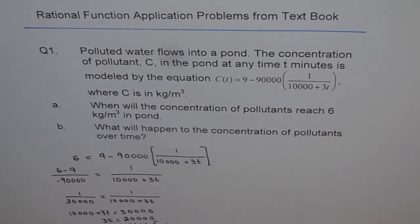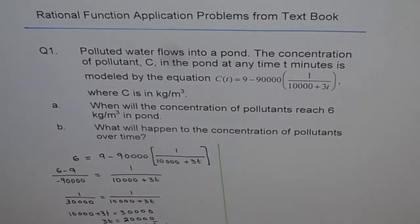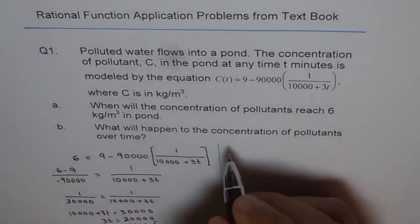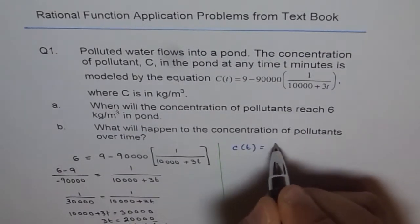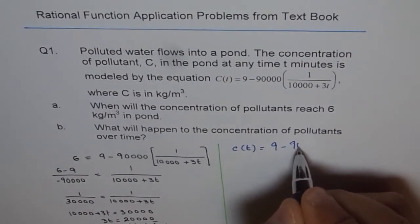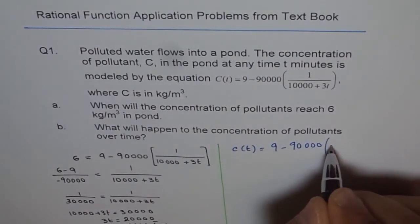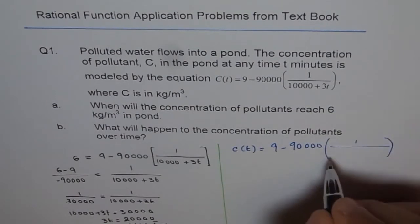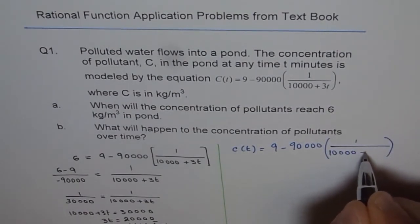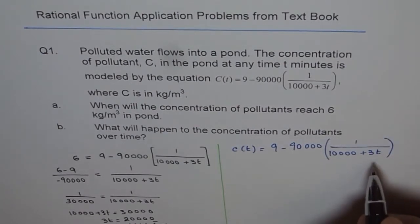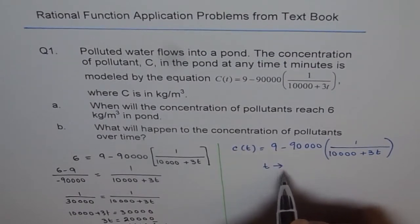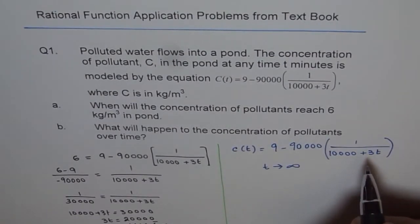Now the second part is, what will happen to concentration of pollutants over time? So from the given equation what we see is, if t is large, the equation for us is C(t) equals 9 minus 90,000, 1 over 10,000 plus 3t. So as t approaches a large value, for example, if t approaches infinity.